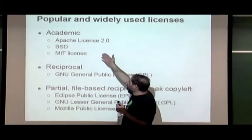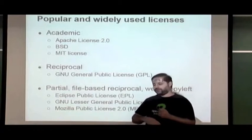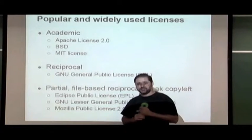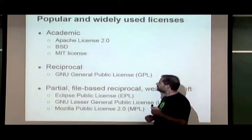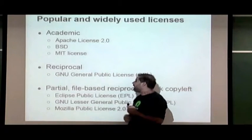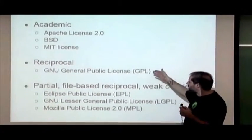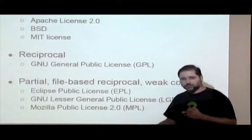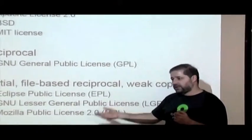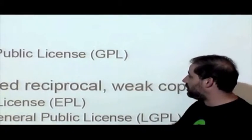For the academic license, for example, we have the Apache license — the Apache Foundation is a very strong community with millions of lines of source code available under it. There is also the BSD and the MIT license. The most used reciprocal license is the GPL, one of the most used licenses worldwide. The Linux kernel is distributed under the GPL, as is software like Emacs, and a whole lot of very important open source software.